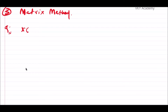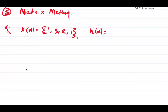Let the input signal x[n] equal {1, 3, 2, 1} and the impulse response h[n] equal {1, 1, -1, 1}. This is the input and this is the impulse response. As you can see, both signals are periodic in nature.